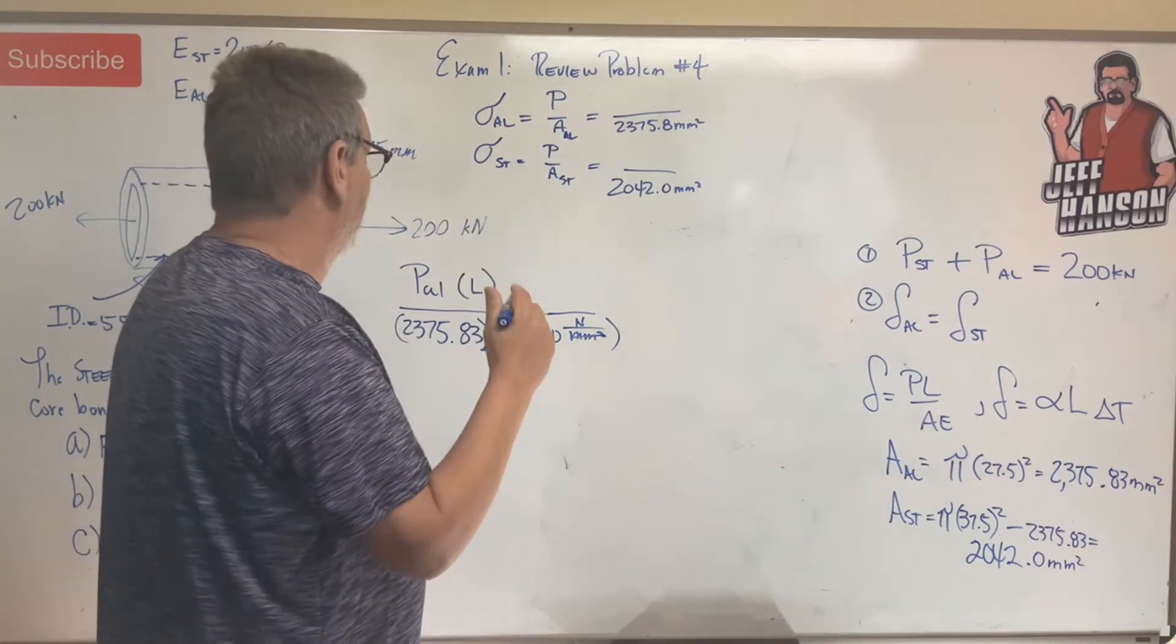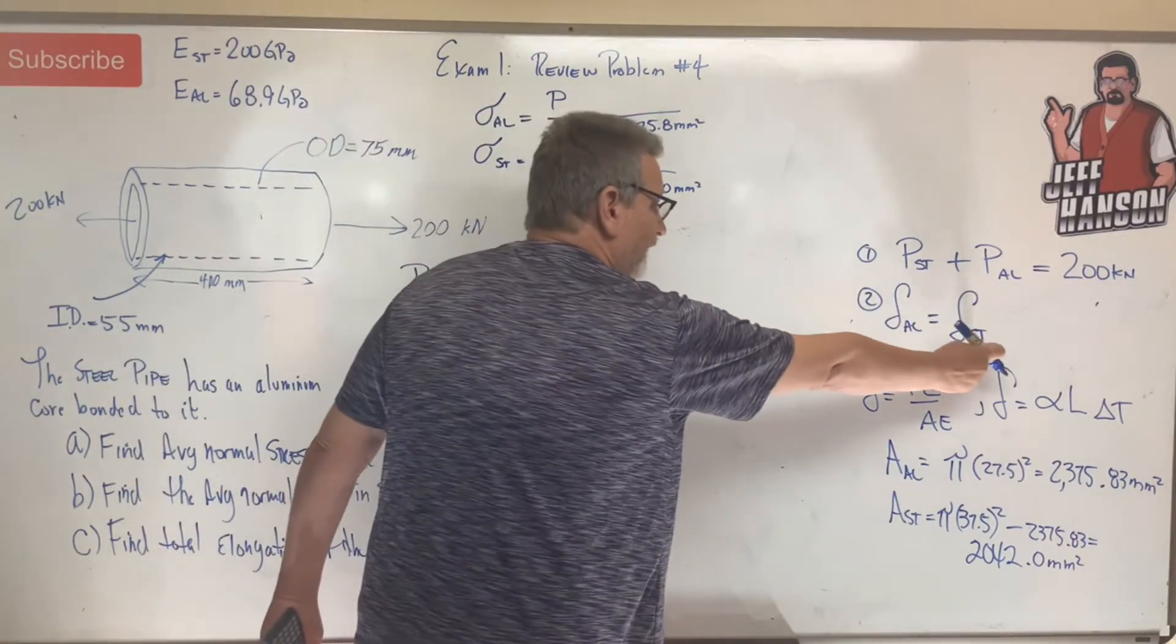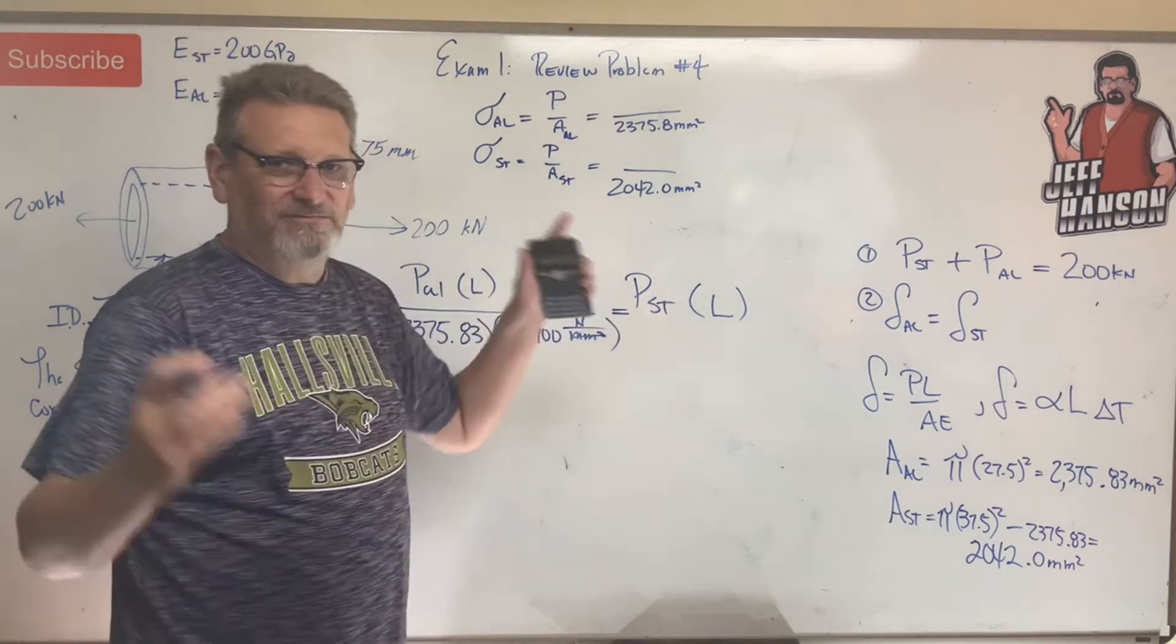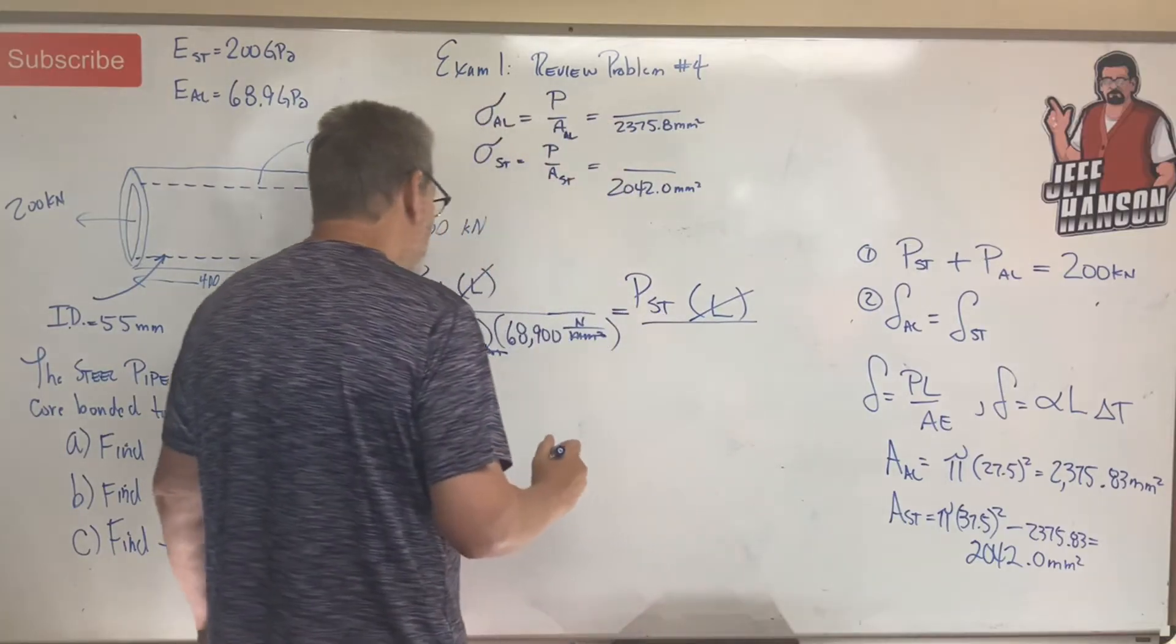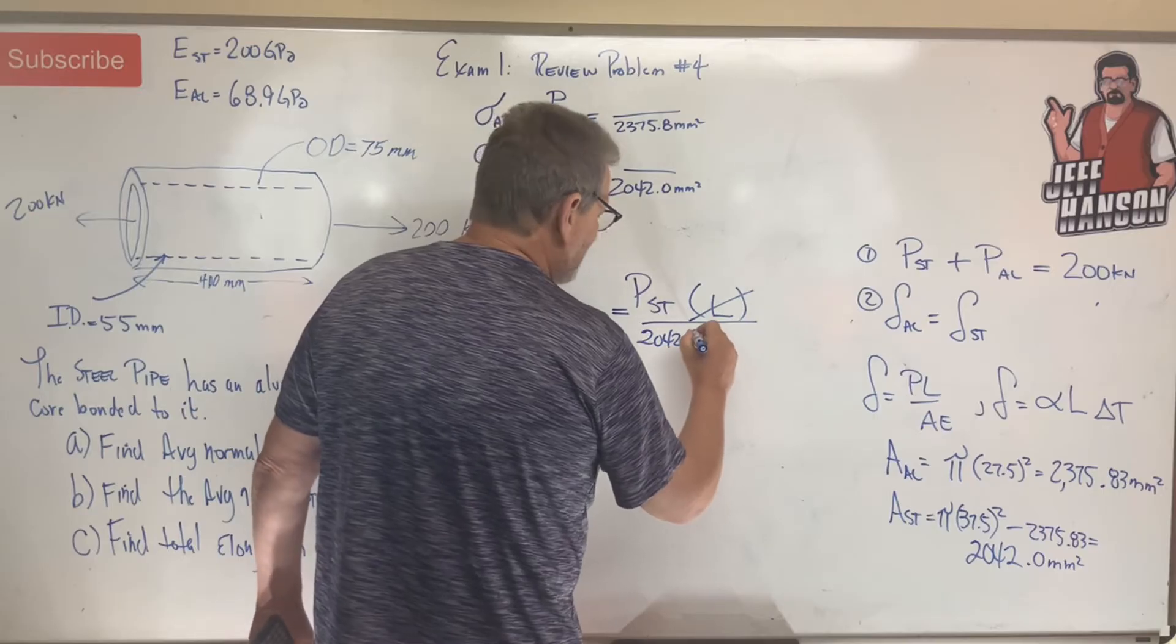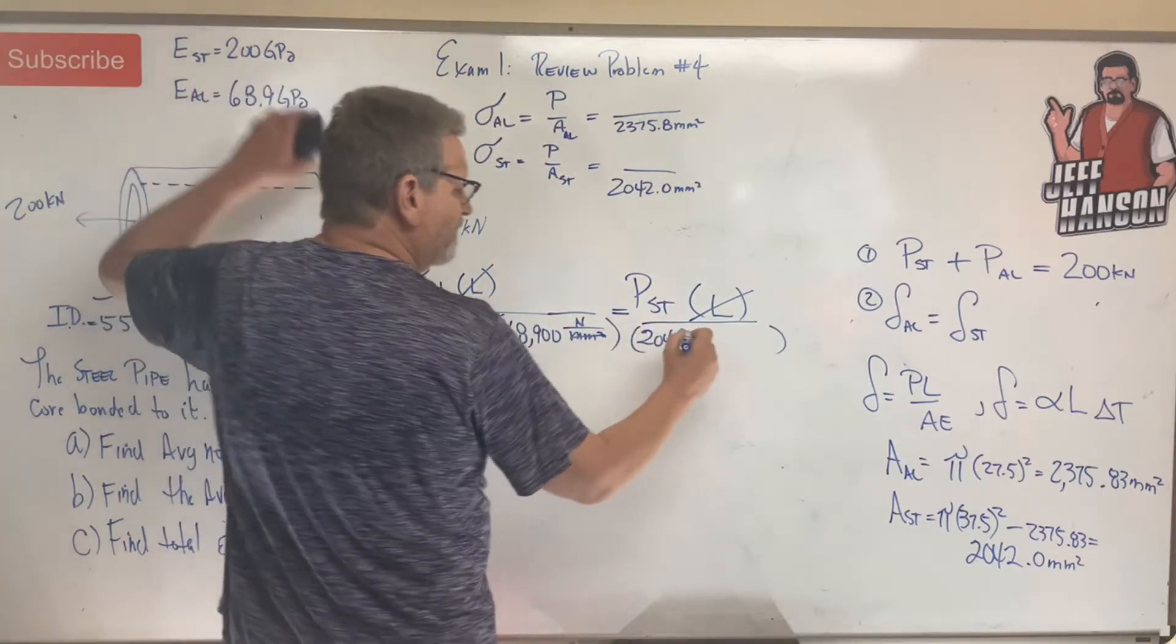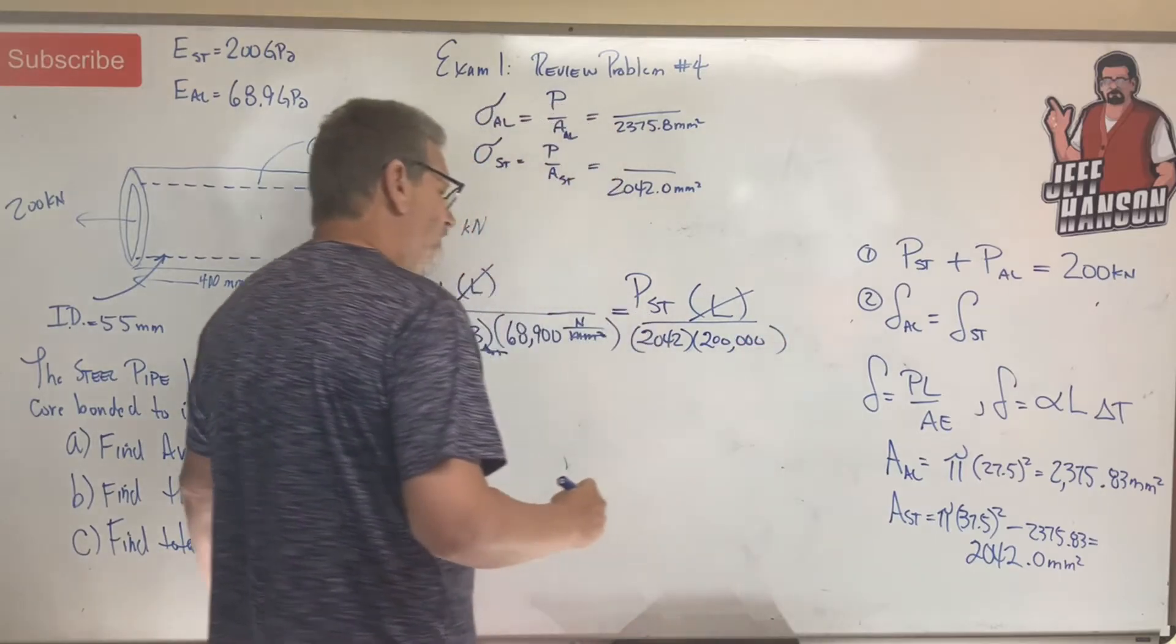This guy right here was in millimeter squared also. Look, bam, those go away, leaves me with newtons down there. Is equal to, here comes the second one, that's this guy right there. P steel times L. Guess what? This L and that L, same L. Let's divide some Ls. What the L, huh? Divided by the area, 2042.0, times E. And E is 200 gigapascals, which is 200,000 megapascals.